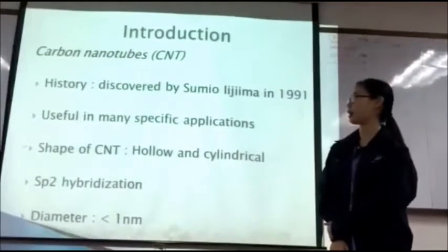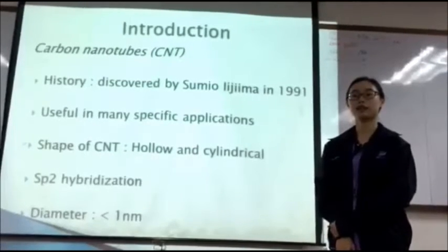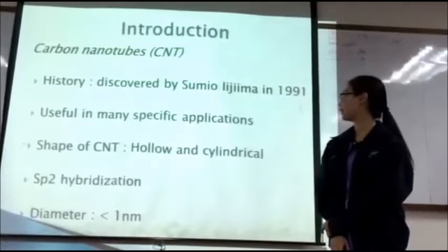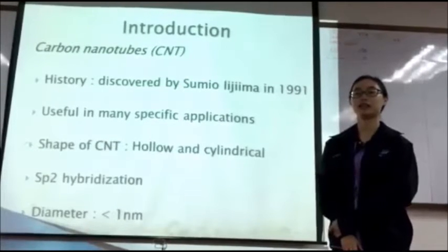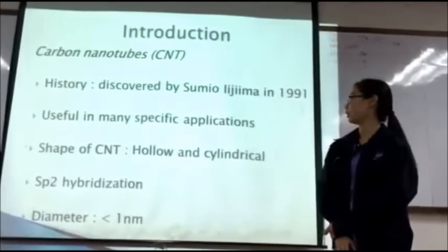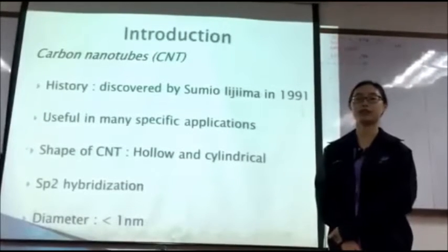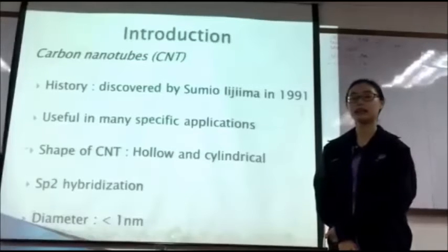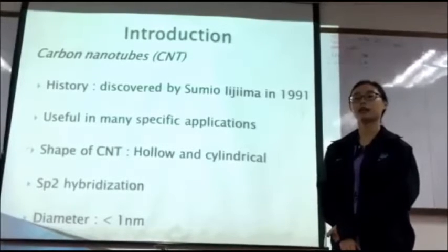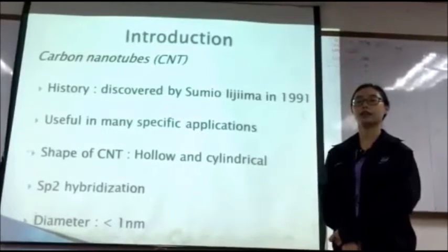Carbon nanotubes were discovered by Sumio Iijima in 1991, and he observed that carbon nanotubes have tubular carbon structures. Since carbon nanotubes are useful in many applications in nanotechnology, they attract many scientists to research their characteristics and properties. Carbon nanotubes are hollow and cylindrical materials made of carbon with a diameter measured in nanometers, and every structure of carbon nanotubes uses sp2 hybridization constructed in a hexagonal lattice of carbon atoms.